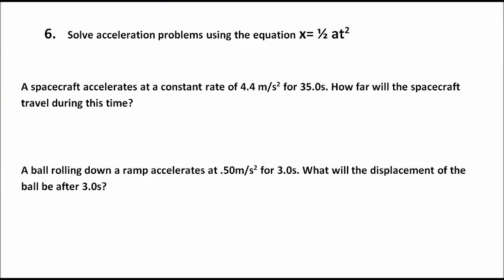So far in this lesson we have looked at two equations involving acceleration: the acceleration equation, a equals vf minus vi divided by t, and the equation to find the final velocity of an accelerating object, which is final velocity equals initial velocity plus acceleration times time. Now we're going to look at a third equation, used to find the displacement of an accelerating object if you know how long it accelerates. The equation is: displacement equals one-half acceleration times time squared.